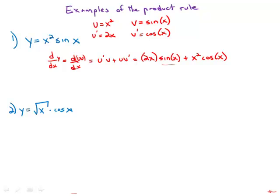So notice that in each piece one of them stays the same and then the other one gets a derivative taken. That is the product rule.